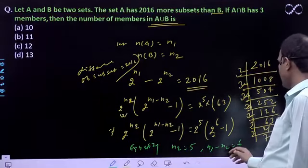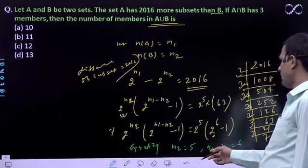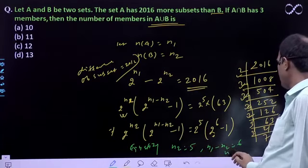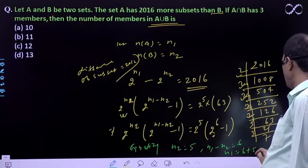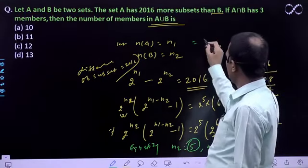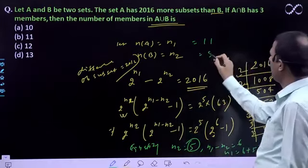So the value of n2 is 5, and from n1 minus n2 equals 6, we get n1 equals 6 plus 5, which means 11. So there are 11 elements in n1 and 5 elements in n2.